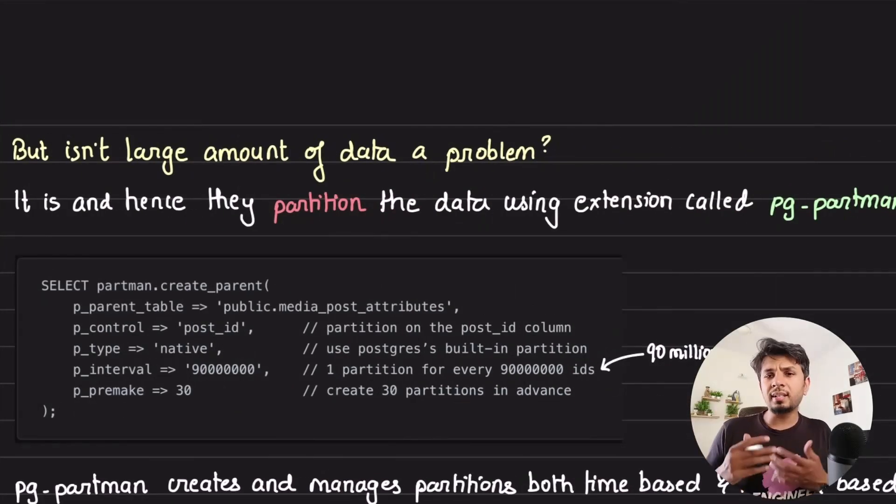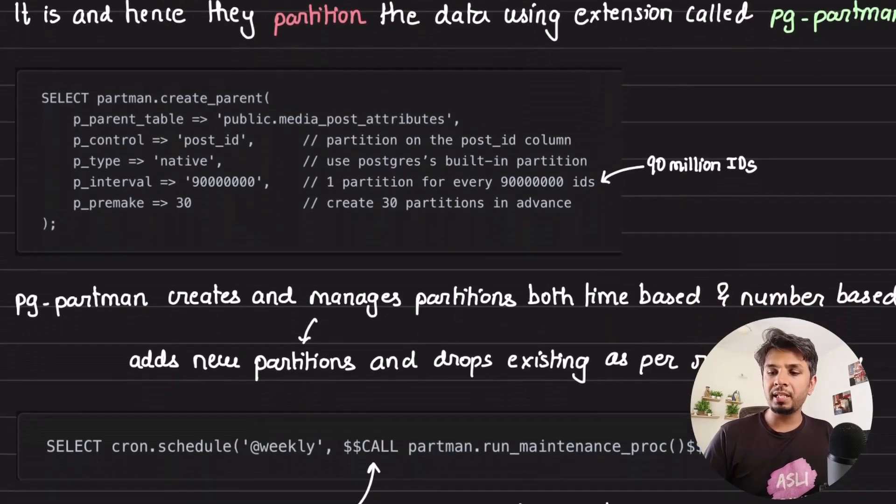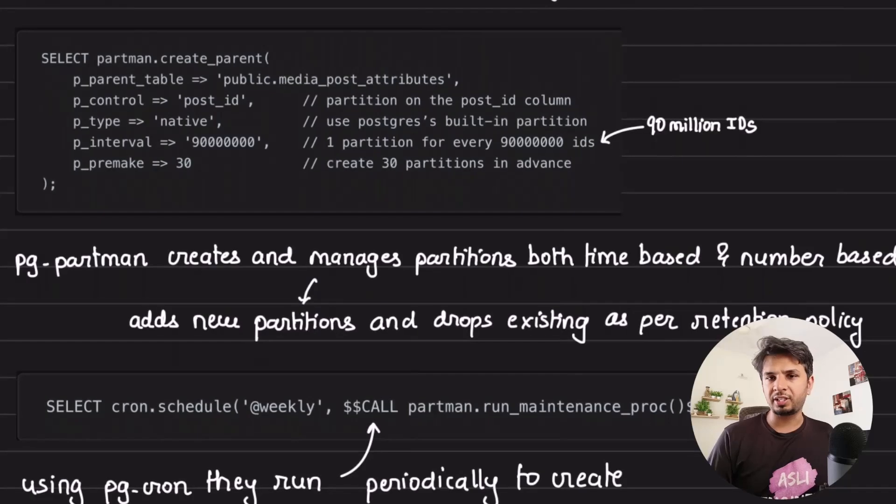Isn't a large amount of data a problem for Reddit? It actually is. And whenever you have a large amount of data as a problem, you typically rely on data partitioning as a way to solve it. Because the media metadata store of Reddit was based on top of Postgres, they could leverage a very popular extension called pgpartman in order to manage the partitions. Pgpartman is a very popular Postgres extension that allows you to create and manage partitions on the basis of time and basis of number.